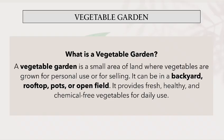What is a vegetable garden? It is a piece of land or area of land where we grow vegetables. It's a vegetable garden where we grow vegetables — they can be for personal use as well as for selling purposes. The piece of land can be your backyard, the rooftop of your house, pots or open field conditions — anything.